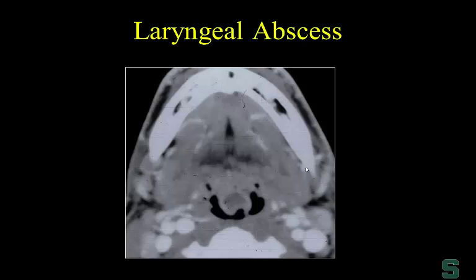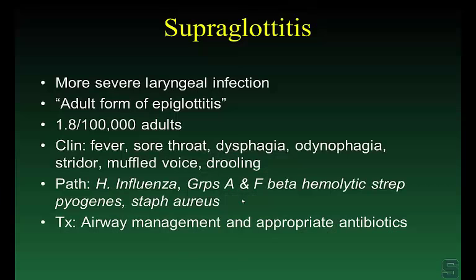Here's a rare case of a little abscess involving the free margin of the epiglottis in a patient with severe fever and sore throat. The next stage is supraglottitis — the adult form of epiglottitis. These patients typically present with fever, sore throat, dysphagia, odynophagia, muffled voice, and drooling. The pathology is most often bacterial, and treatment is airway management and antibiotics.